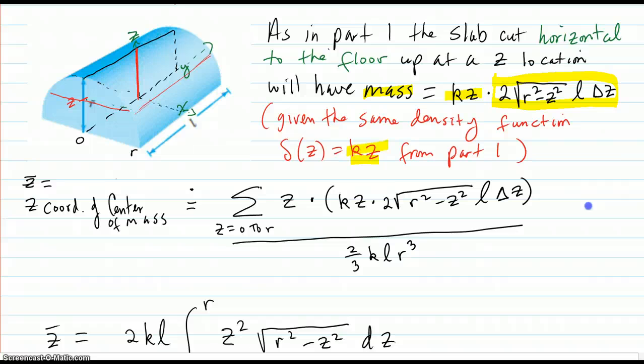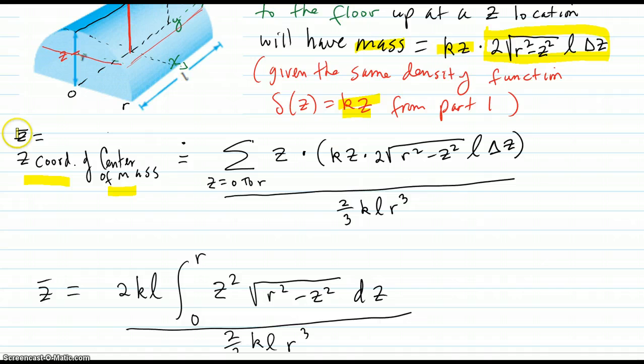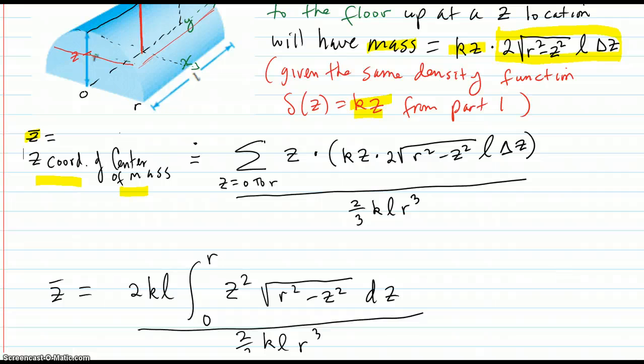So then we put that into the center of mass formula. The Z coordinate of the center of mass, which is Z bar, is the location. So that's your location there. And then this is your mass, right there. That whole thing was a mass. And you want to sum those all up, and divide by the total mass sum, which we already know from the previous problem.